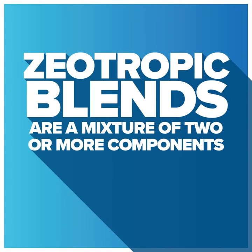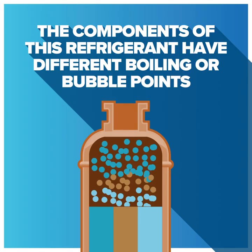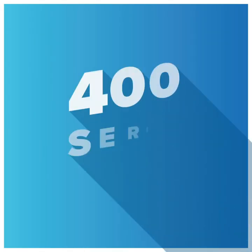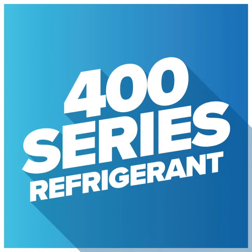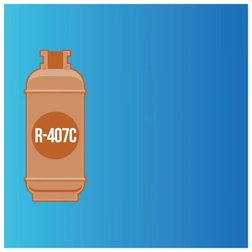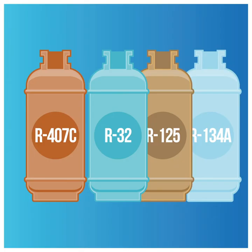Zeotropic blends are a mixture of two or more components. The components of this refrigerant have different boiling or bubble points. An example of a zeotropic blend is any 400 series refrigerant, such as R407C, which is the blend of R32, R125, and R134A.